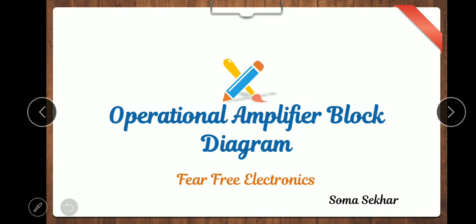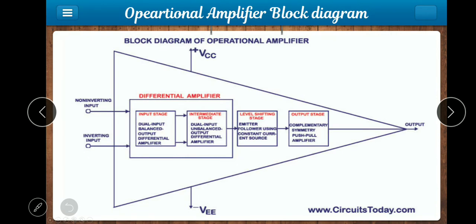If you are looking at the op-amp block diagram, you can easily understand it. We are going to represent the op-amp block diagram. Mainly there are 4 stages in the op-amp block diagram: the input stage, intermediate stage, level shifting stage, and output stage. These are the 4 main stages present in the block diagram of an op-amp.